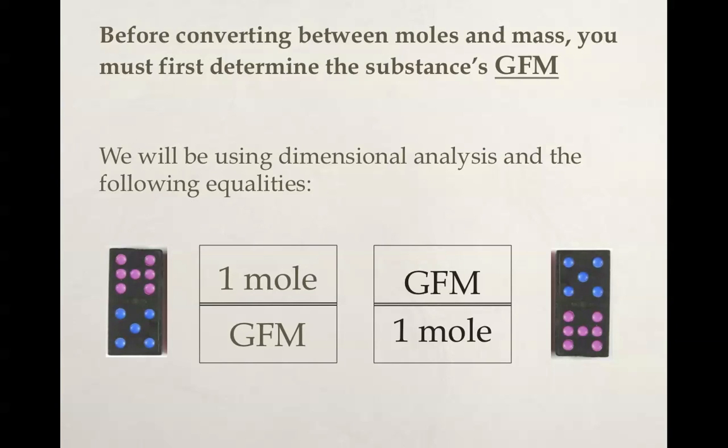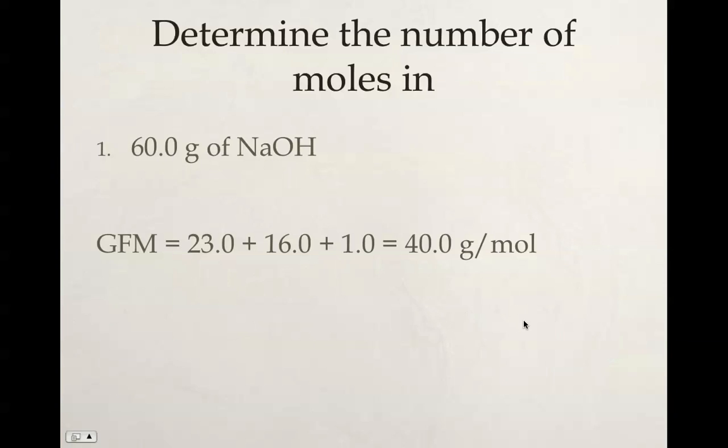Before we convert between moles and mass, you always have to first determine the substance's gram formula mass, or GFM. Then we're going to use dimensional analysis with equalities in our conversion factor. This would be either 1 mole over the gram formula mass, or if we need the other way, the gram formula mass over 1 mole. This GFM will come from that specific compound's formula.